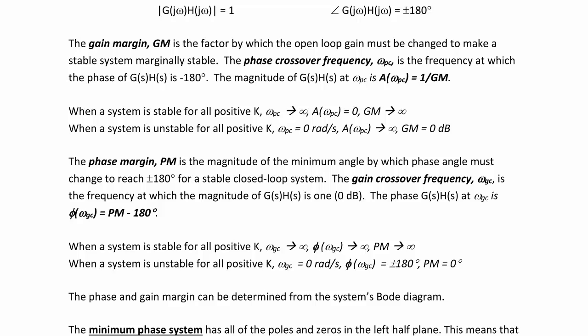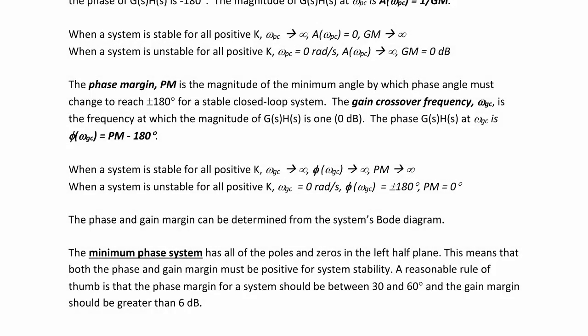When a system is unstable for all positive k, ω_gc equals zero radians per second, the phase is plus or minus 180 degrees, and the phase margin is zero degrees. The phase and gain margin can be determined from the system's Bode diagram, which we will demonstrate during this lecture. Note that for a minimum phase system, all of the poles and zeros are in the left half plane, meaning both the phase and gain margin must be positive for system stability. A reasonable rule of thumb is that the phase margin should be between 30 and 60 degrees and the gain margin should be greater than 6 decibels.